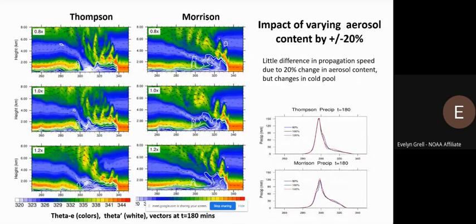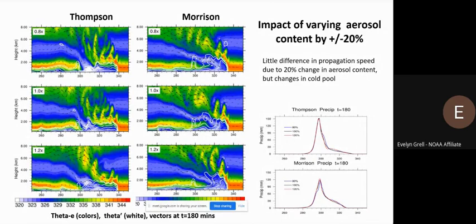The two schemes are actually more different from each other than the differences due to aerosols. When we change the aerosol content by plus or minus 20% — admittedly a small difference given the uncertainty in actual aerosols, but a starting point — the impact is small. We see some differences in the cold pool indicating changes in microphysical processes and some small changes in the timing and location of precipitation. But the difference between the schemes is greater than the difference due to aerosols.